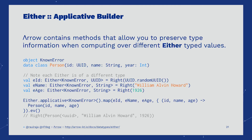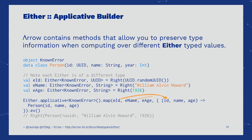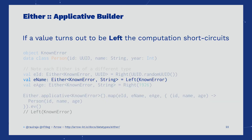We can use the applicative builder to compute over different values of Either that are independent from each other. With the applicative builder, we can map or convert into tuples a set of operations, preserving the type information and the arity. As with monad comprehensions, if we ever find a left value, we will short-circuit and return the left known error.